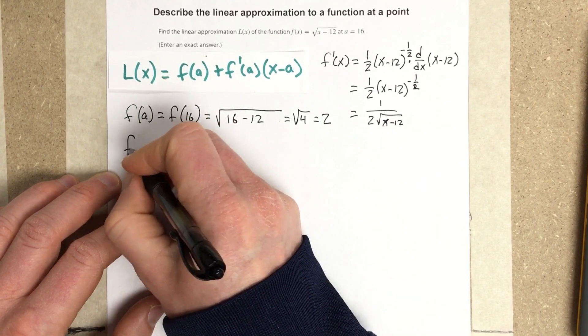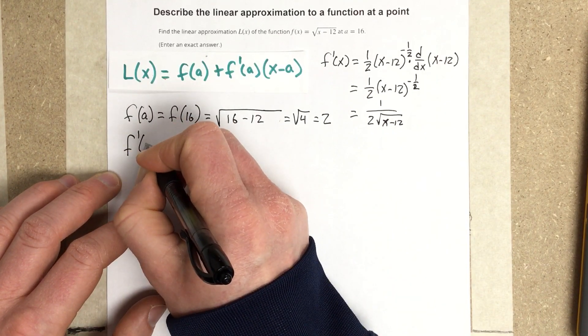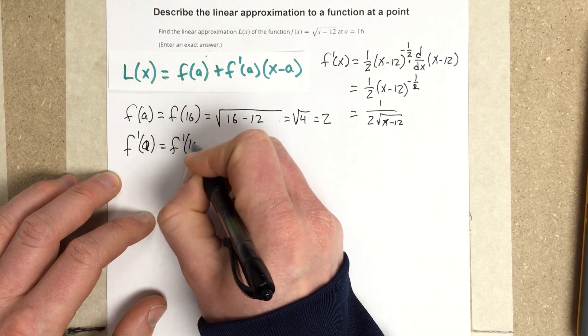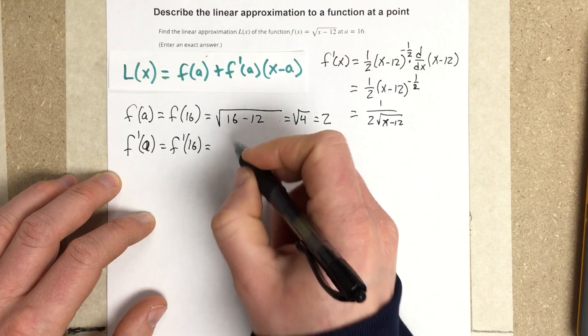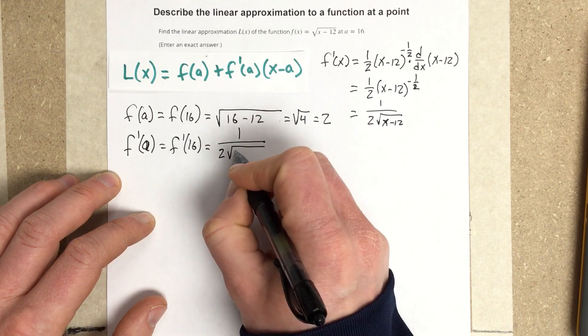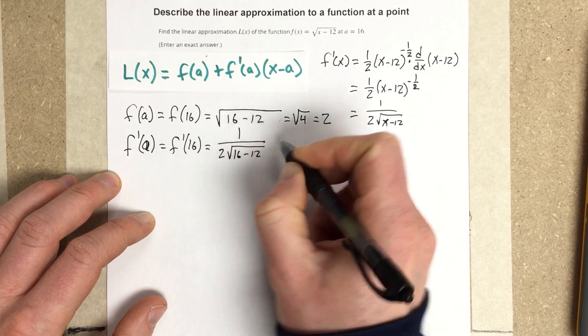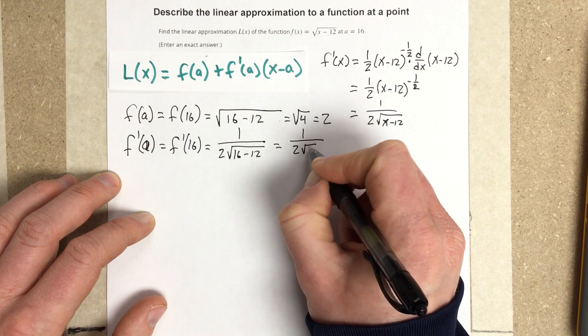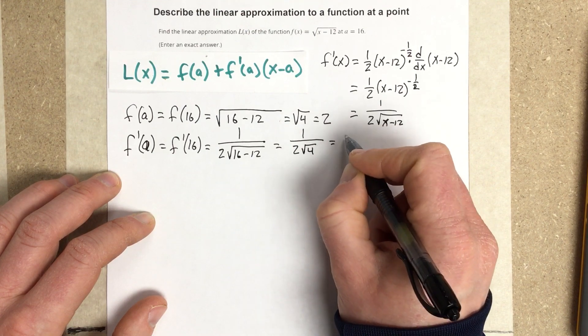And now I'm going to do the same thing, but now with f prime of a. I'm going to write f prime of a. That's f prime of 16, which will be 1 over 2 root 16 minus 12, which will be 1 over 2 root 4, which is 1 over 4.